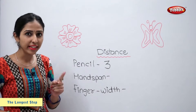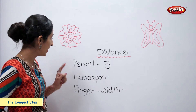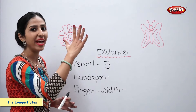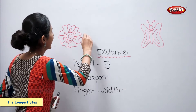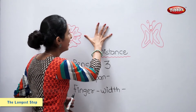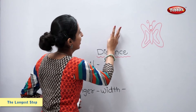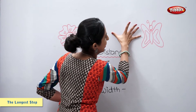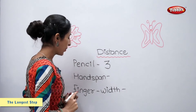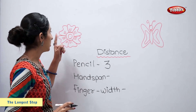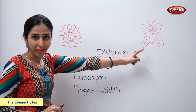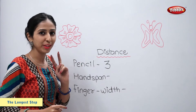Now let us measure the difference using handspan. One. Two. So the distance between the flower and the butterfly is two handspans.